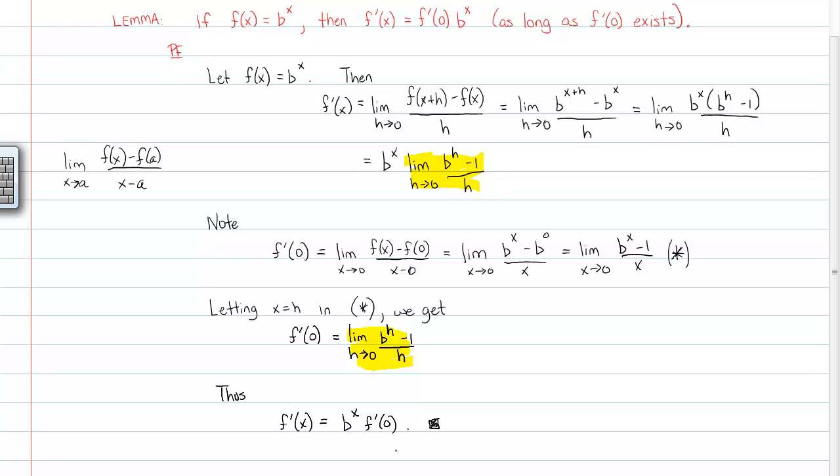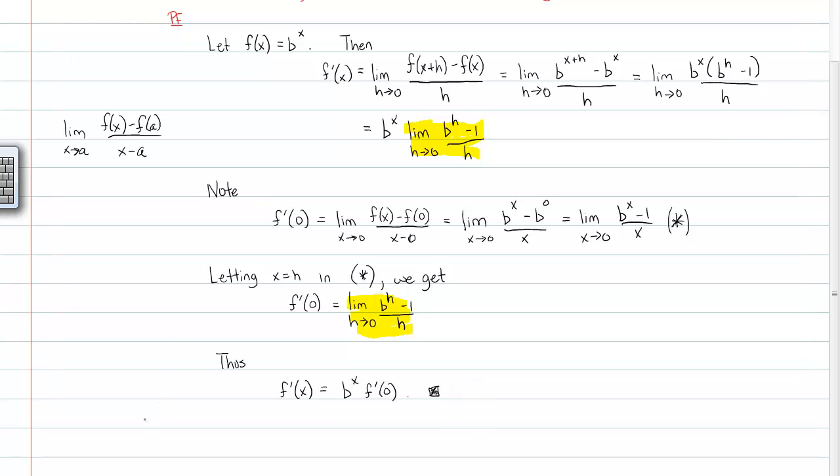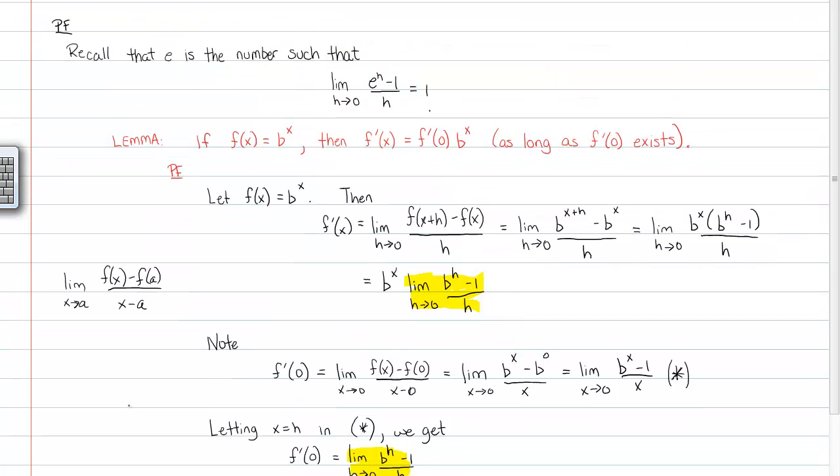Now we're going to use that lemma to help us with the rest of this problem. Remember, our ultimate goal is to find out what the derivative of e to the x is. Hence, if we let g of x equal e to the x, then g prime of x is going to be e to the x times g prime evaluated at zero.